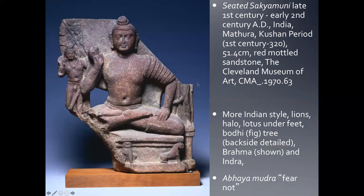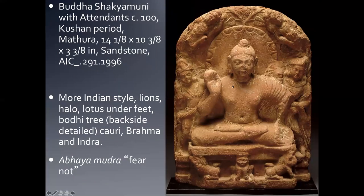When we look at art commissioned during Kanishka's reign, we see a more Indian style. There's iconography we've seen before: lions, the Bodhi tree, Brahma, and Indra — though Indra is broken off on this particular piece. The Buddha is doing the abhaya mudra, meaning 'fear not,' sitting in the lotus position on a bed of lotus petals. His body is quite different from what we saw in the Greco-Roman style — it's softer, and the cloak he's wearing is see-through, more in line with ancient Indian art. We can even see the prana and a soft belly.